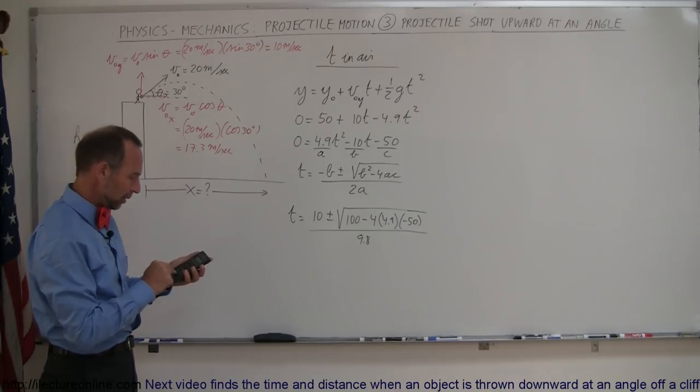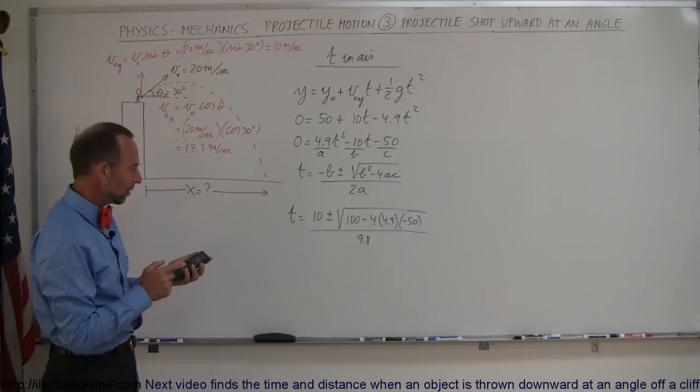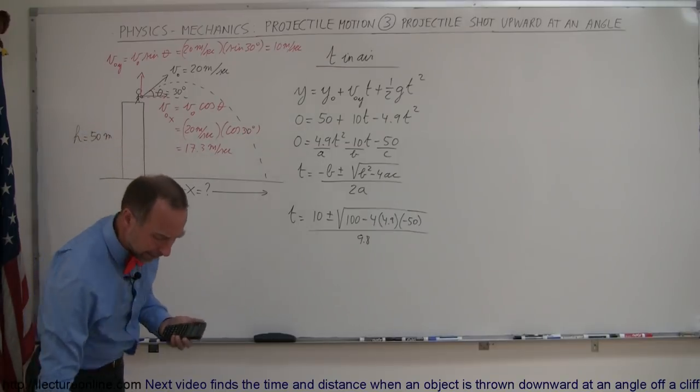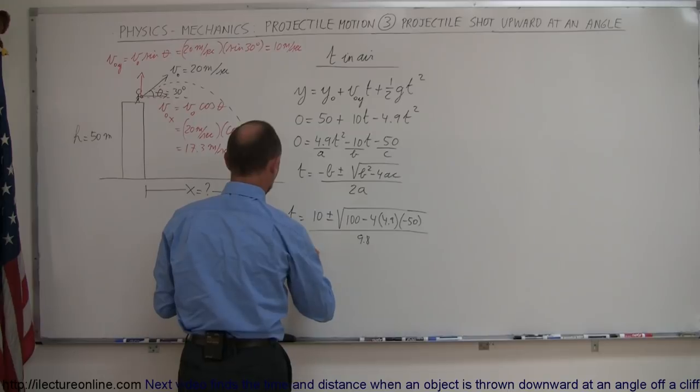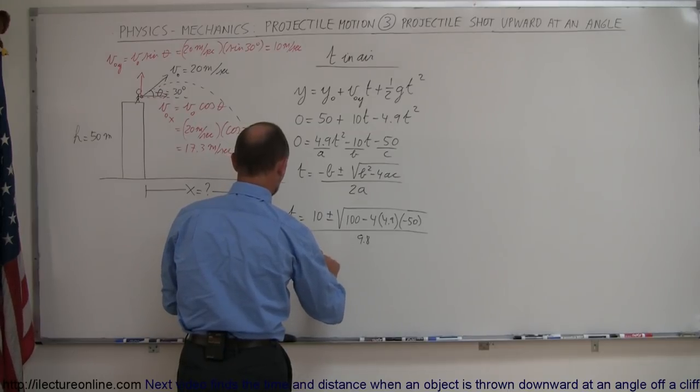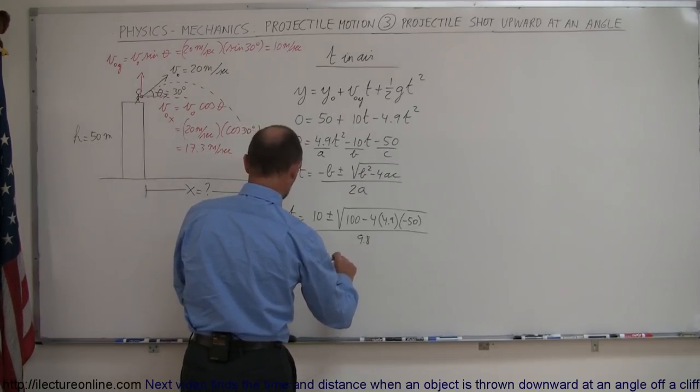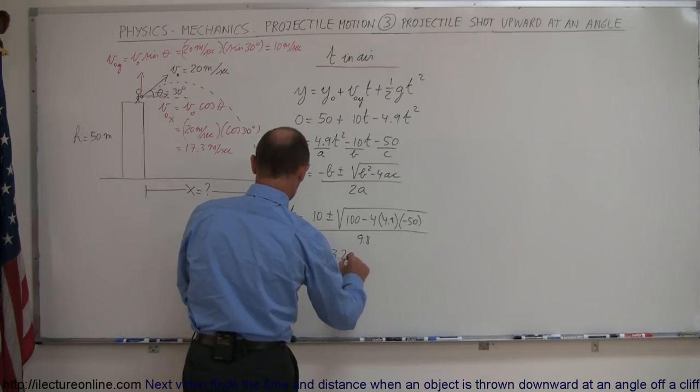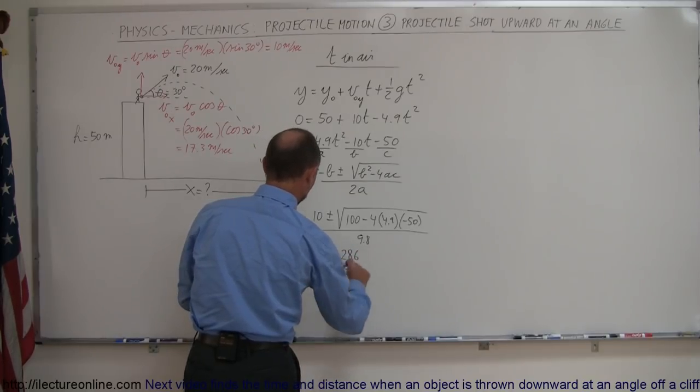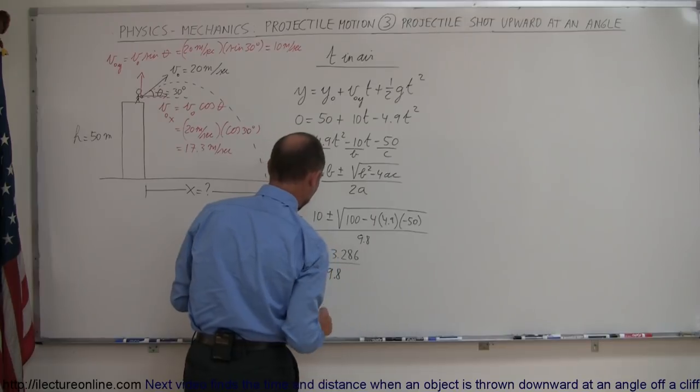So we have 4 times 4.9 times 50, add to that 100, which is 1080. Take the square root of that. And let me write that number down. So we have time is equal to 10 plus or minus 3.286, the whole thing divided by 9.8.